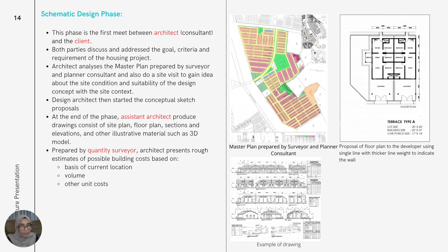The first phase in basic services is the schematic design phase. In this phase, there shall be a first meeting between the architect consultant and the client, who is the developer. Both parties will discuss and address the goals, criteria, and requirements of the housing project. The architect will also analyze the master plan prepared by surveyor and planner consultants, and conduct a site visit to gain an understanding of the site conditions and develop a concept suitable for the site context. The architect shall then start with conceptual sketch proposals.